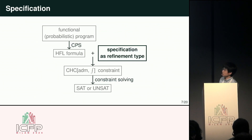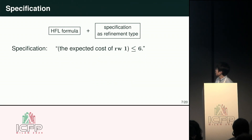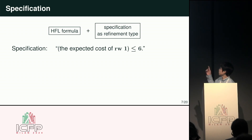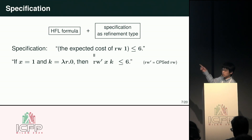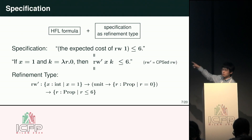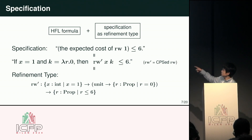I will explain how to give a specification as a refinement type. As an example, consider the specification for the random walk program. Since the CPS transformation gives the expected cost, we can describe this specification as a specification for the CPS transformed term, and this can be naturally expressed using a refinement type. So we can think of this refinement type as a specification for the original program.